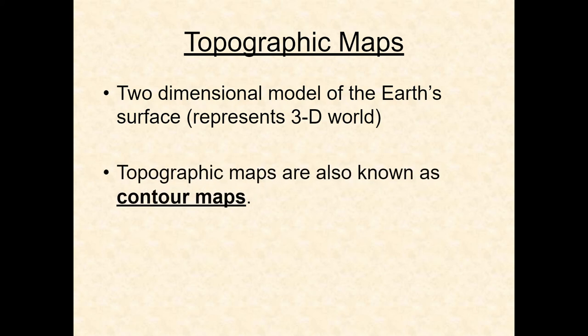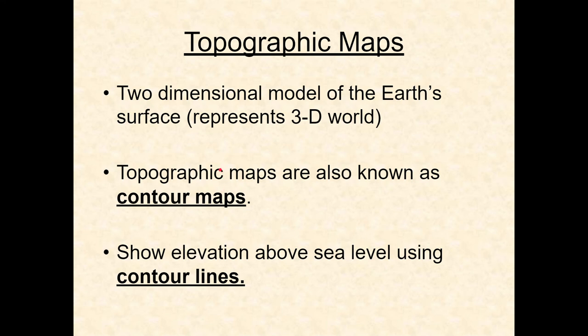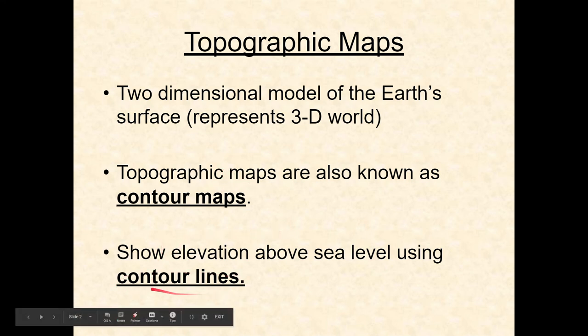If you're a fan of the movie The Matrix, you know they look at the code and can see the matrix. This is kind of like that — you're looking at these two-dimensional maps, but the more you practice looking at them, you stop seeing a flat piece of paper and you start seeing topographic features and landforms.